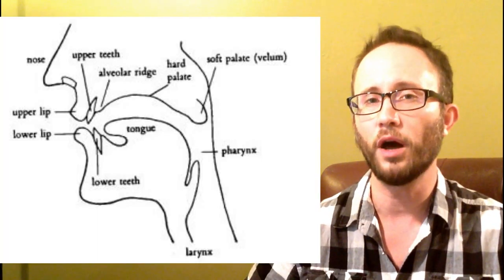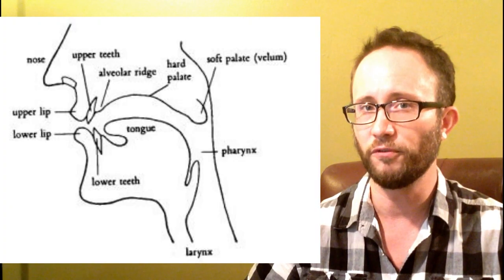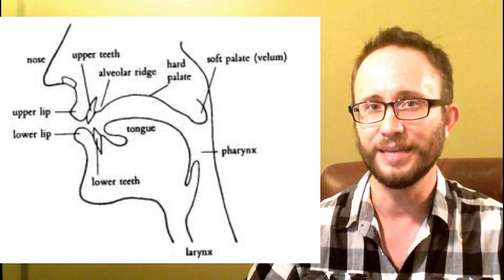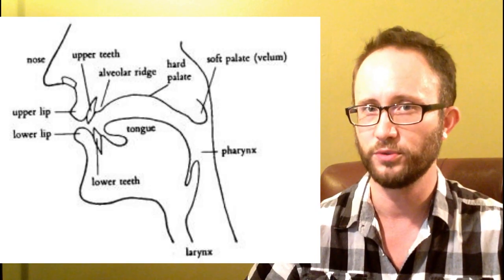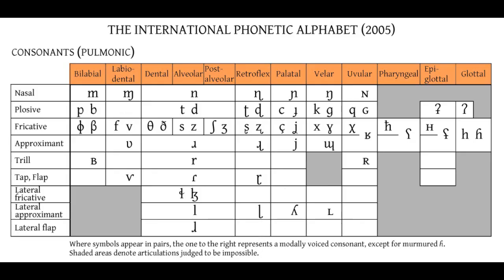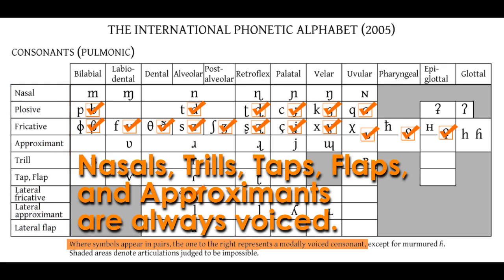The articulators are the lungs, throat, vocal folds, lips, tongue, and nose. If you arrange all of these things into a chart, you get three major ways of describing sounds. Those are the place of articulation, the manner of articulation, and the voicing of the sound.